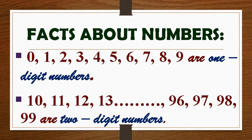Children, the numbers 0, 1, 2, 3, 4, 5, 6, 7, 8 and 9 are all one-digit numbers.